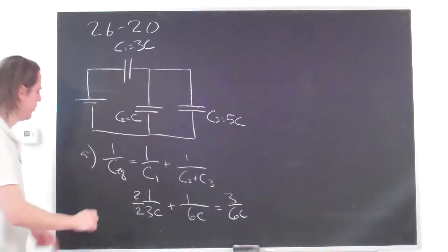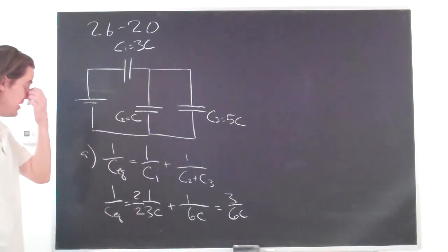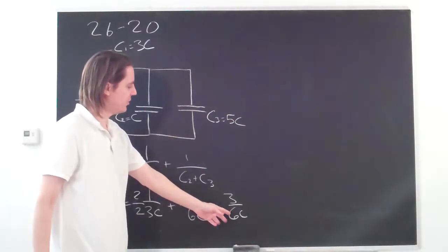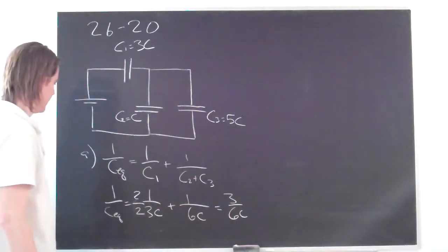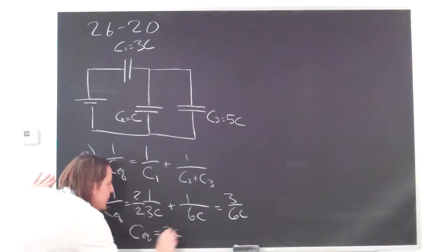But, of course, that's 1 over the equivalent capacitance. And if we invert it, we see that the equivalent capacitance is just 6C over 3 is 2. So I'll write it down here. CEQ equals 2C. So that was part A.